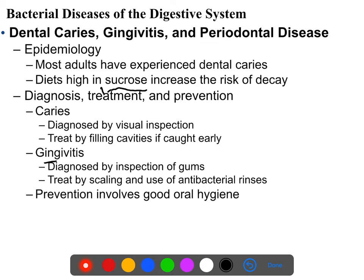Gingivitis is usually diagnosed either by symptoms - you notice your gums are hurting and bleeding - or by visual inspection during a dental procedure. It is treated by scaling, and in more advanced cases where they actually peel back your gums and scrape away the plaque underneath to get rid of the bacteria, and also by antibacterial rinses. Symptoms can be treated by use of various anti-inflammatory or periodontal toothpastes. Prevention for both dental caries and gingivitis is good oral health care: brush your teeth, floss your teeth, use mouthwash.